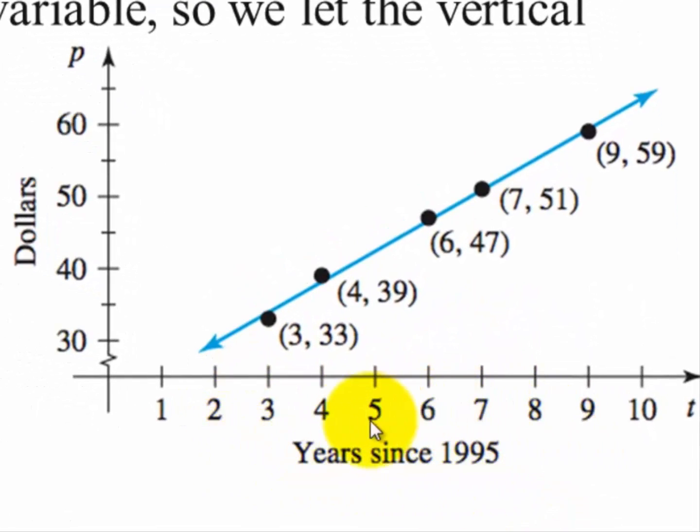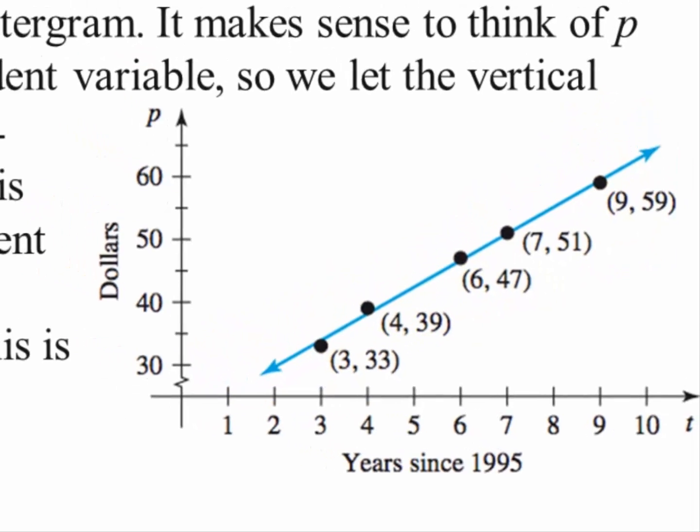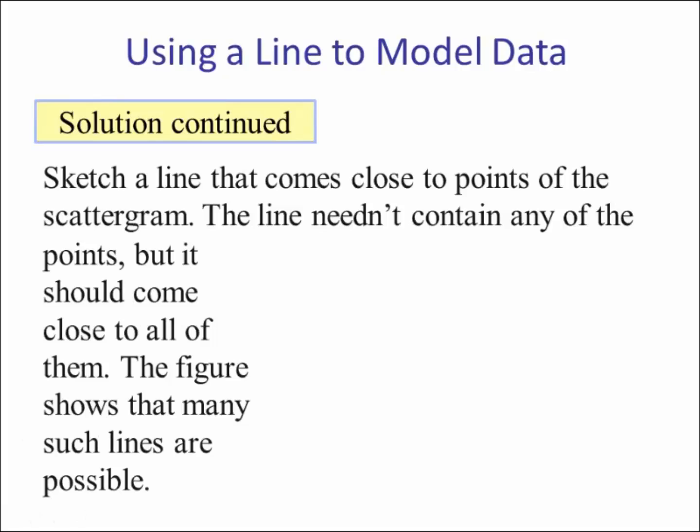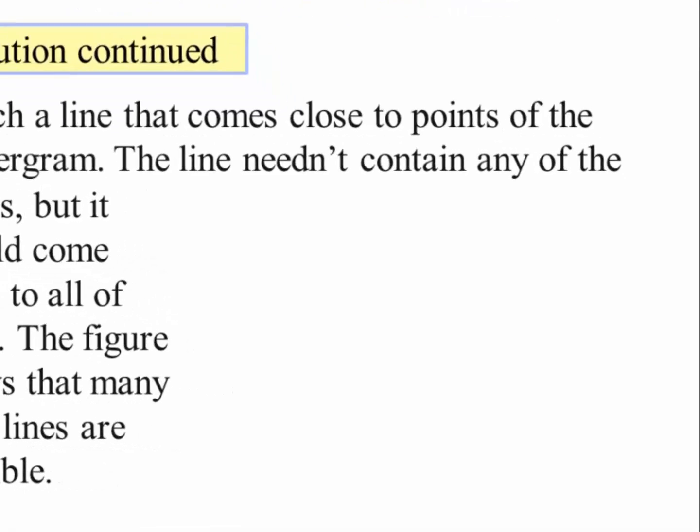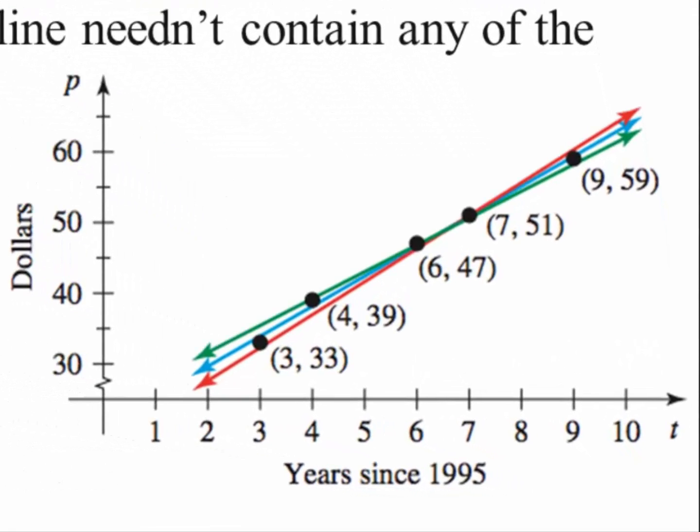So here we have our t axis, our p axis. The units are given, and then we have our data, and then we draw a line that comes close to the data. Now this line doesn't have to touch any points but it should be close to all of them, and here's an example of how you can have some different lines.